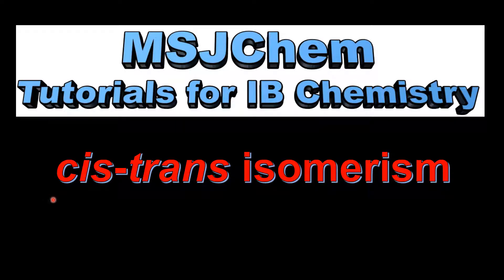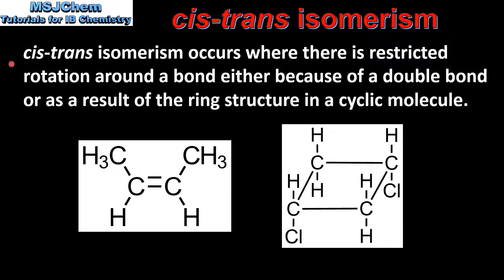This is MSJChem. In this video I'll be looking at cis-trans isomerism. Cis-trans isomerism occurs where there is restricted rotation around a bond, either because of a double bond or as a result of the ring structure in a cyclic molecule.